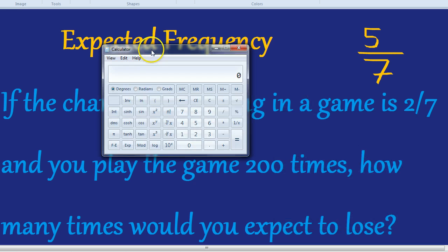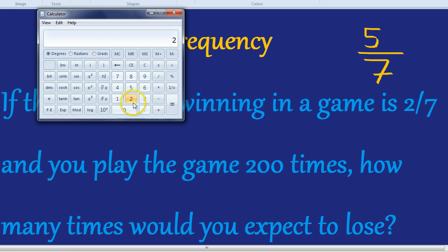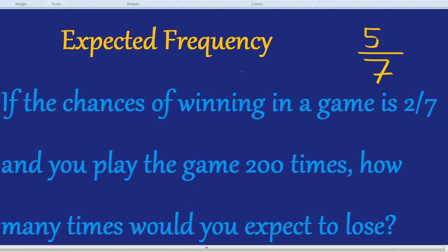Let's do that in this case. So we play the game 200 times. So we're going to do 200 multiplied by the probability, which is 5 divided by 7. In other words, that's 142.8. So roughly, we expect to lose the game 143 times.